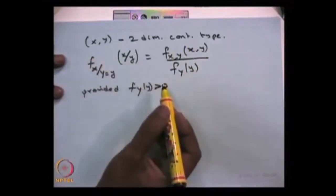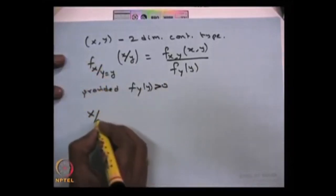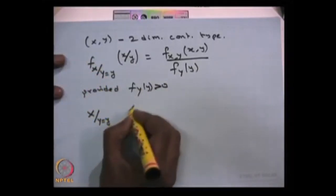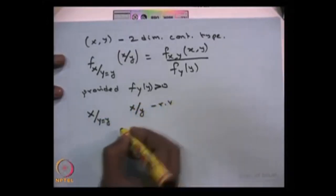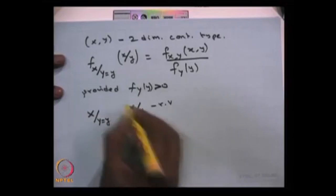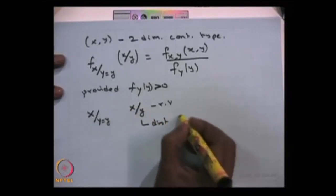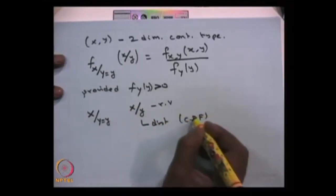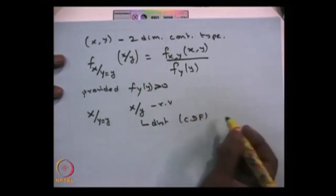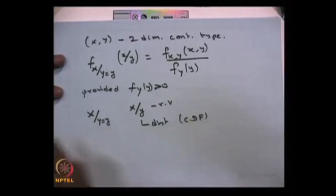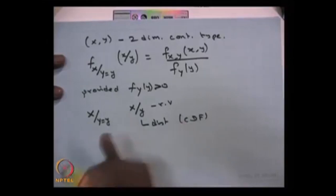Once you know the conditional distribution, it is itself another random variable — X given Y equals y, which we can call X_y. Since this is also a random variable, you can find its distribution. This distribution is called the conditional distribution, and you can find its CDF. Just as you find the CDF of any discrete random variable by summing the mass, or for a continuous variable by integrating the probability density function up to a point, you get the CDF of this conditional distribution.